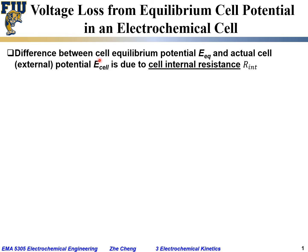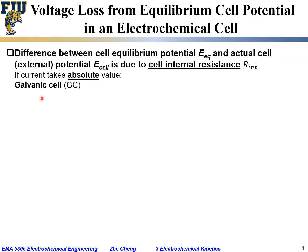The difference between cell equilibrium potential E_eq and actual cell potential E_cell is due to cell internal resistance R_i. As long as there is current passing through the cell, there will be a difference between the equilibrium cell potential and the actual cell potential. Using absolute values for cell current or current density, for a galvanic cell this difference in potential equals current times total cell internal resistance.